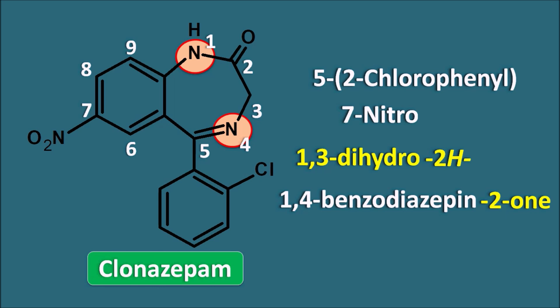In this way we can write the IUPAC names of benzodiazepines, indicating points of saturation using the terms 'dihydro' and indicated hydrogens. We must always give the least number to the indicated hydrogen, so we use 1,3-dihydro-2H. These terms can be written as separate words or attached to the root name — both are allowed by IUPAC nomenclature, though attaching them to the root name is preferred. Thank you for watching.